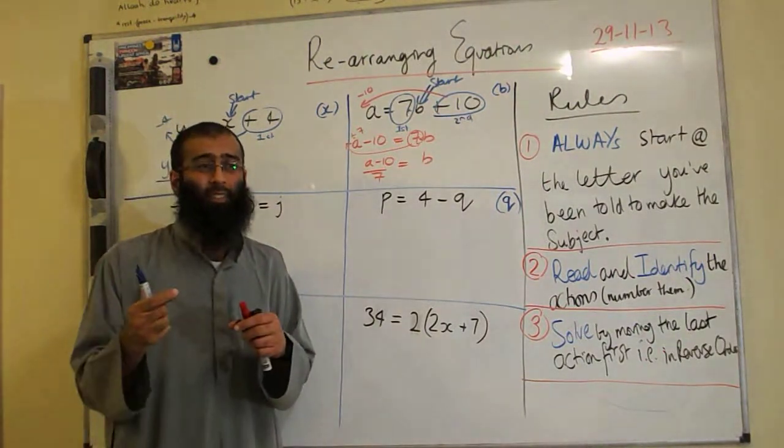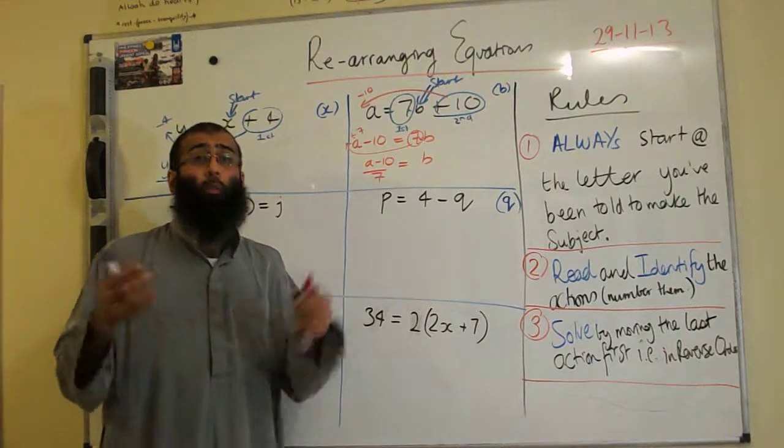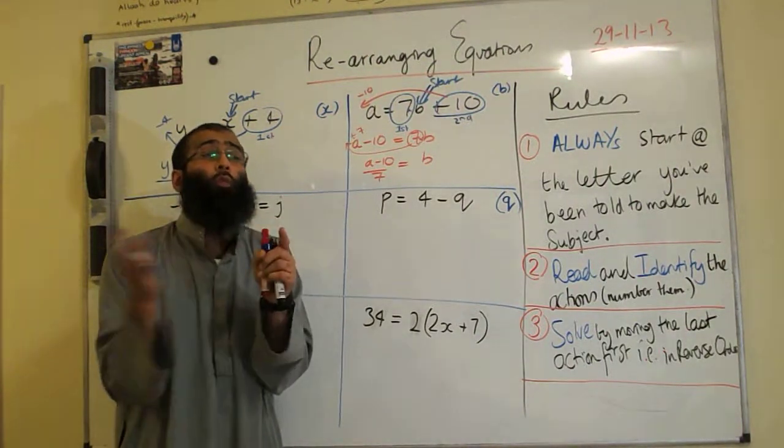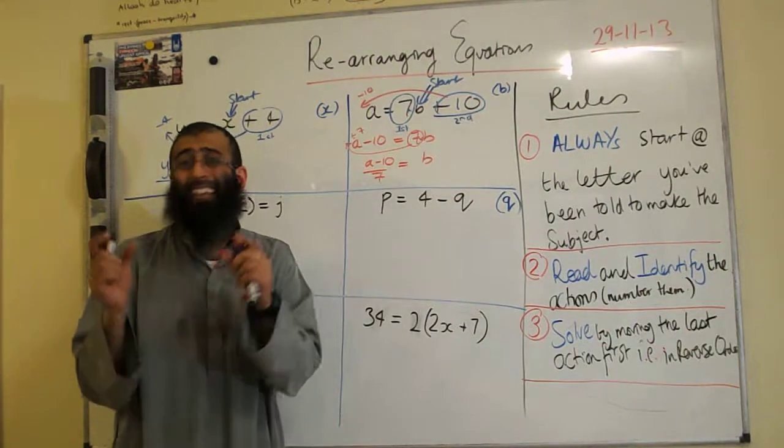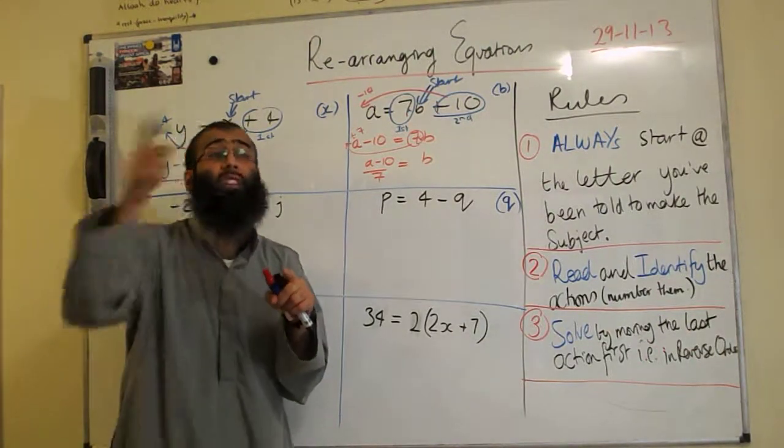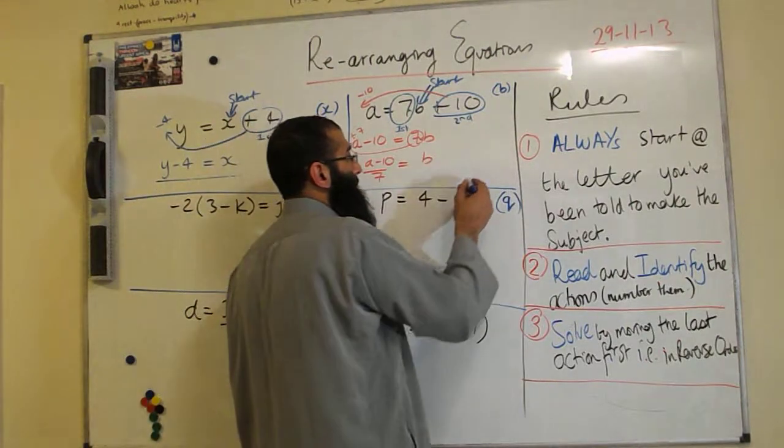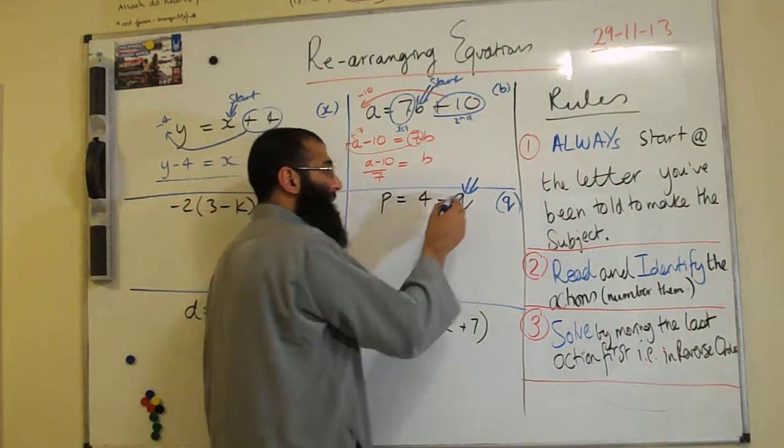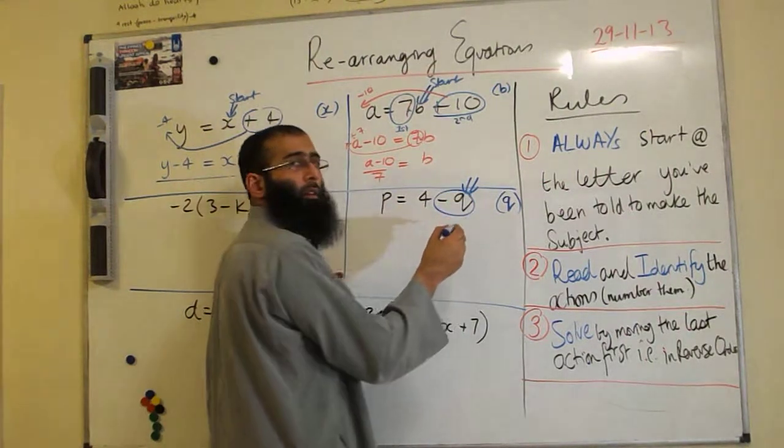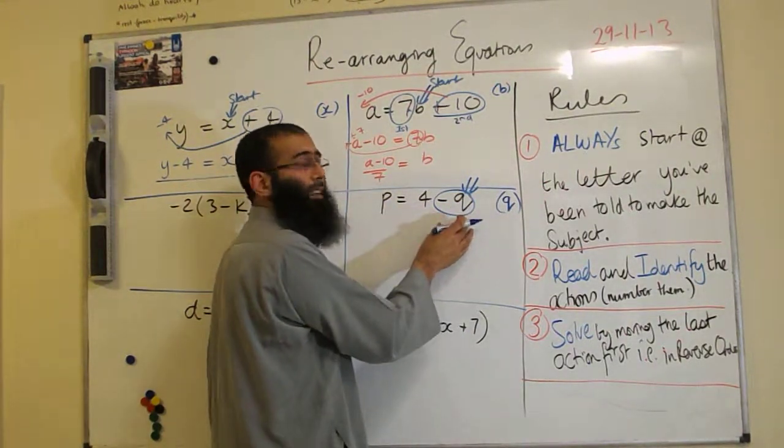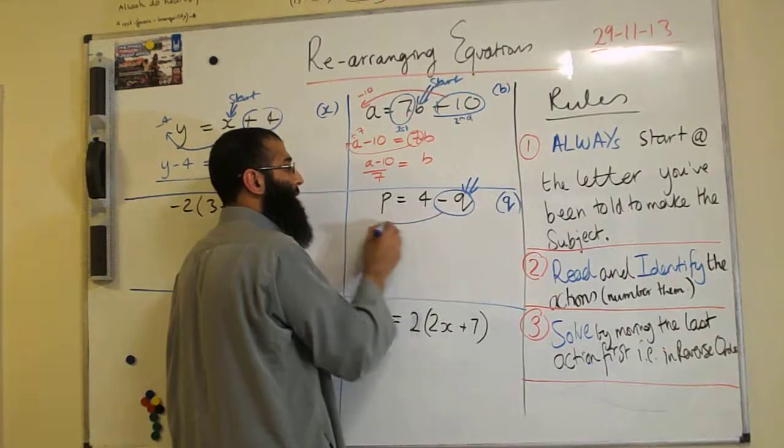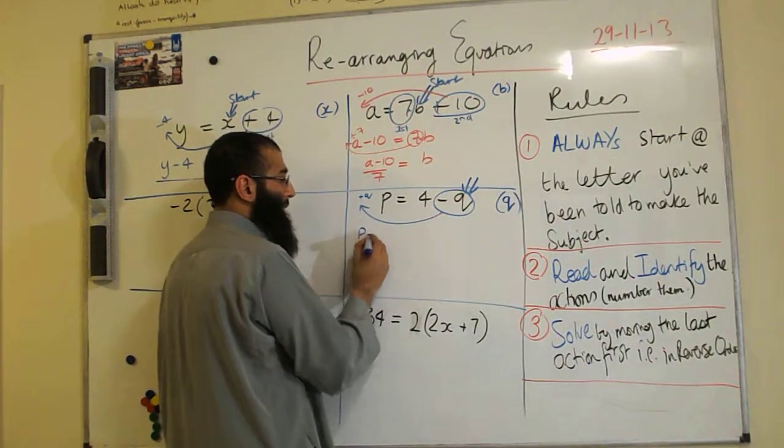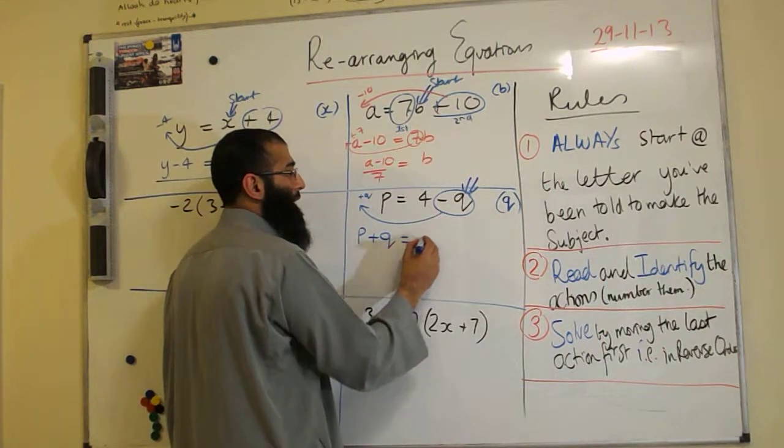So in this particular instance, normally we leave the thing that we're looking to make the subject, we leave it alone and move everything else. In this case, as an exception, we move the thing that we're trying to look at. Because it is a negative letter, we're going to move that instead to the other side. Opposite of minus Q is plus Q. So we have now P plus Q is equal to 4.